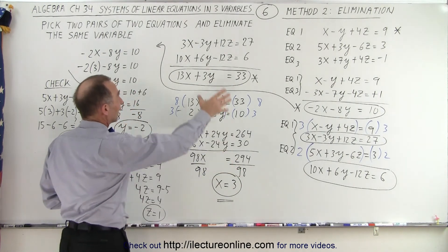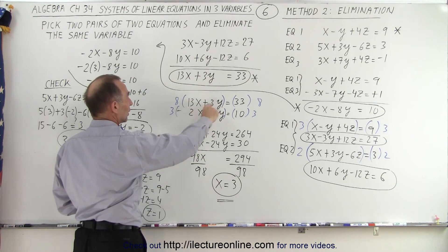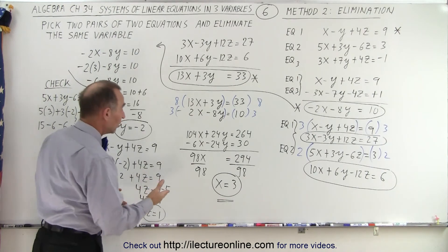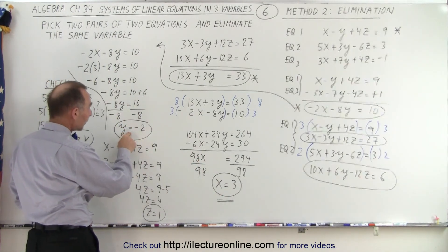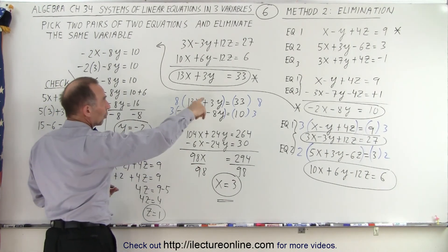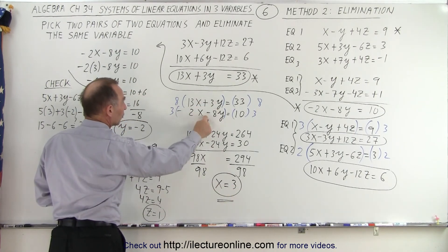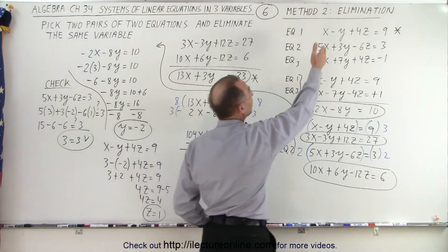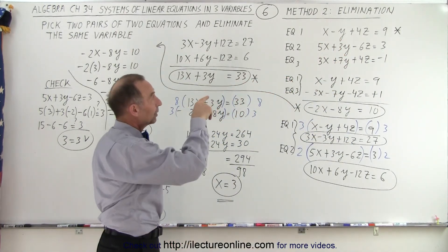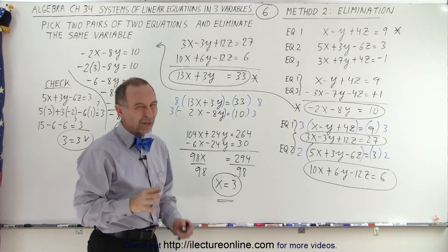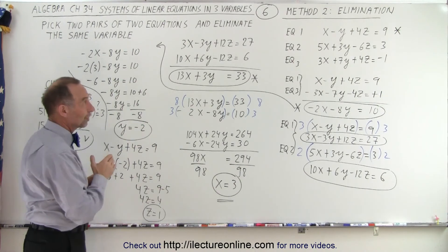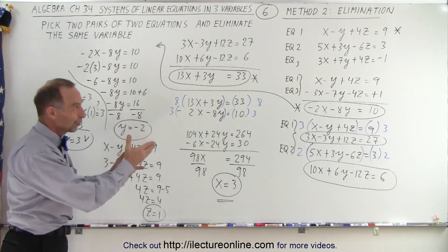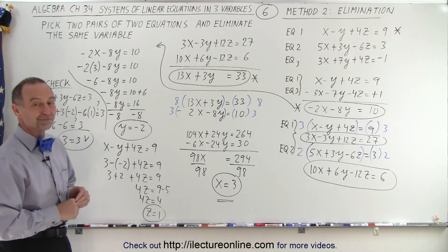Once you eliminate z from both pairs, you end up with two equations and two unknowns. You eliminate y and solve for x. When you plug x back in to find y, you can use either of those two equations — it doesn't matter. To find z, you plug x and y into any one of the three original equations. But then to check, if you used equation one to find z, you must pick one of the other two equations to verify your answer. That's how it works.